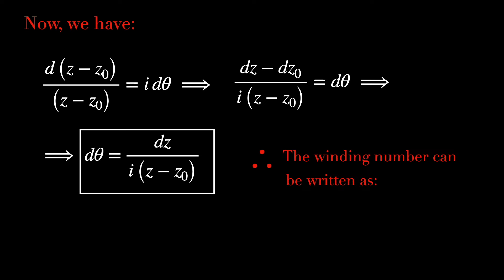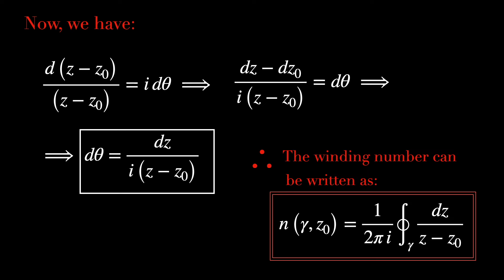And therefore, the winding number can be written as 1/(2πi) times the integral over this closed curve of dz/(z - z0).